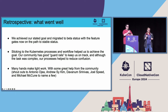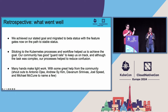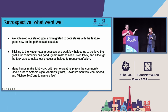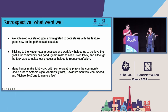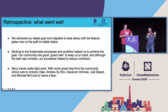What went well? We did it — we got to beta. The feature gates are now on the path to stable, and the process is going the way it's supposed to. Using Kubernetes processes and workflows kept things on track despite the road bumps. And shout-outs to the people who made it happen: Antonio, Andrew Sykim, Dims, Joel Speed, El Miko, and many more who worked hard to track down interactions and differences between in-tree and out-of-tree for various providers.